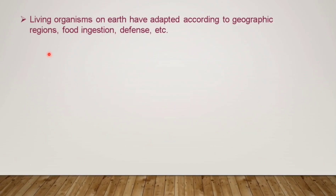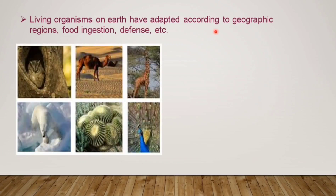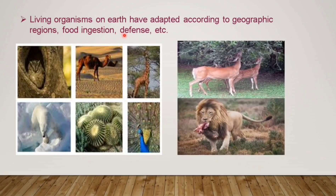Living organisms on Earth have adapted according to geographic regions, food ingestion, and defense. Animals are adapted to their geographic region — camel and cactus plants are found in the desert area, whereas polar bears and penguins are found in snow areas. So animals adapt to their environment. Food ingestion refers to whatever food they eat, and defense means how they protect themselves from predators or dangers.